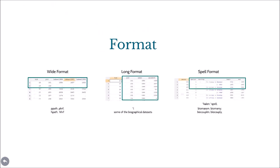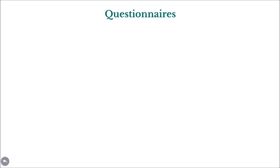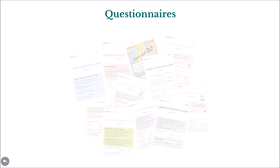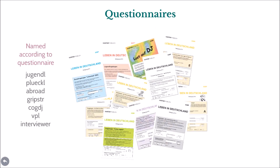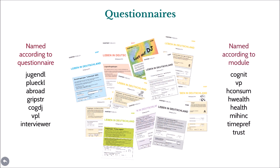Finally, many of our dataset names contain references to the underlying survey instruments or constructs. For example, the ABROAD dataset, which contains information from the instrument 'Your Life Abroad', or the grip strength dataset, which contains information from the grip strength test. There are also some datasets that contain information on specific survey modules, such as the COGNIT dataset, which only contains information from the tests of cognitive potential, or the TRUST dataset, which contains information from the trust module.